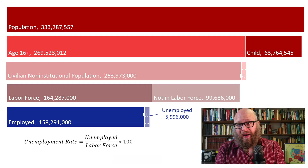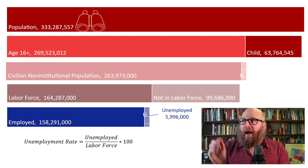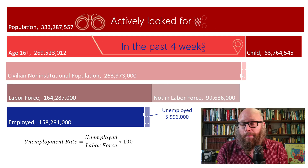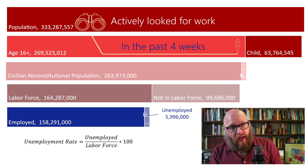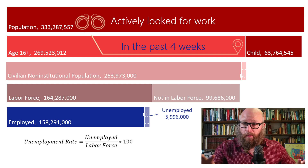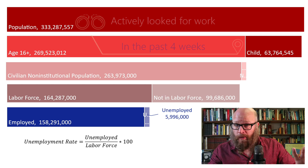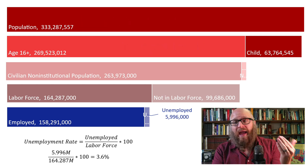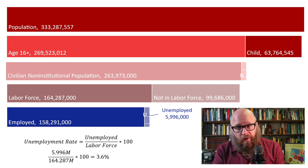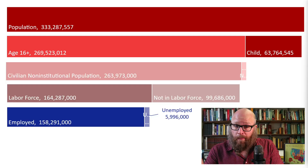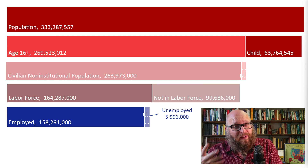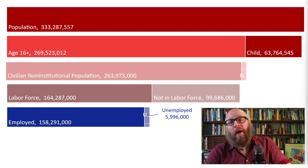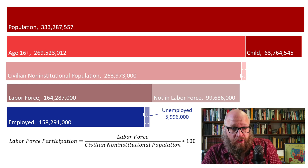So the official unemployment rate takes the total number of people unemployed — defined as those who have actively looked for work in the past four weeks — and divides that by the size of the labor force, which is total unemployed plus total employed. Plugging in numbers: 5.99 million divided by 164 million gives us 3.6%. But one number is not going to tell the whole story. We might also be interested in the labor force participation rate.